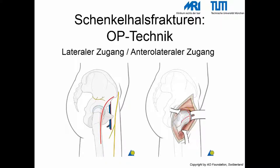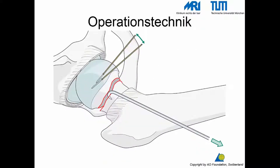Diese Grafiken zeigen exemplarisch den lateralen oder anterolateralen Zugang für die operative Versorgung einer Schenkelhalsfraktur. Die gestrichelte Linie markiert die Schnittführung, falls eine Kapseleröffnung notwendig ist. Eine weitere Grafik zeigt, wie eine potenzielle Verhakung des Schenkelhalses aufgelöst werden kann: Dabei wird ein Einzinkerhaken in das distale Fragment eingehängt und der Kopf mittels zweier Kirschner-Drähte manipuliert.